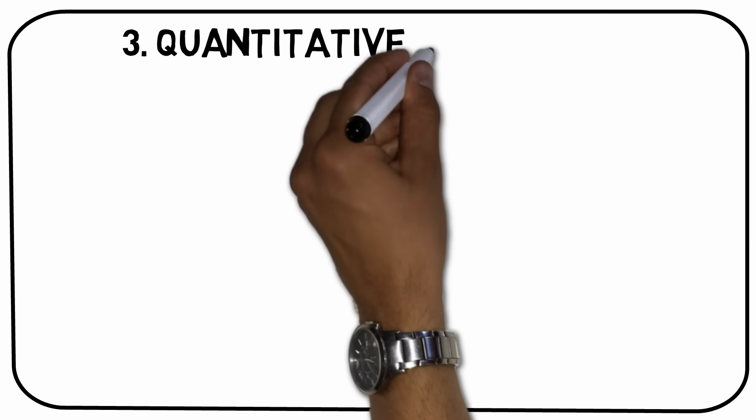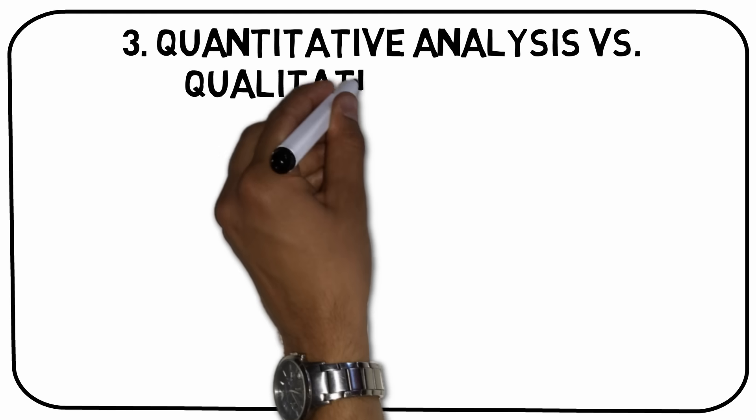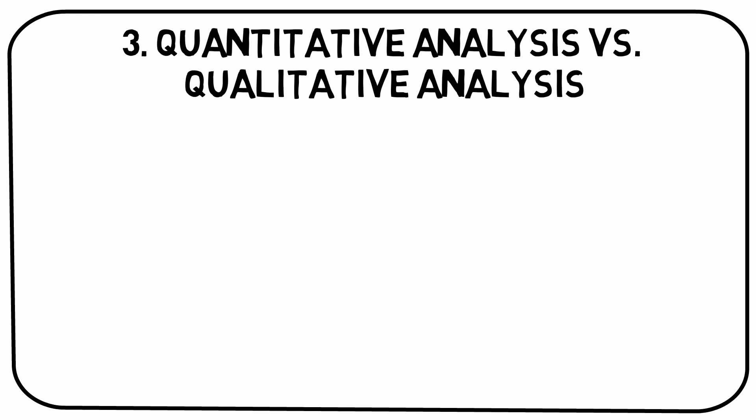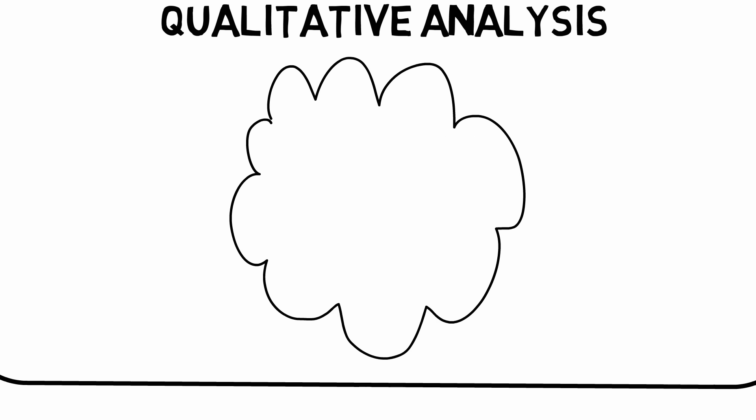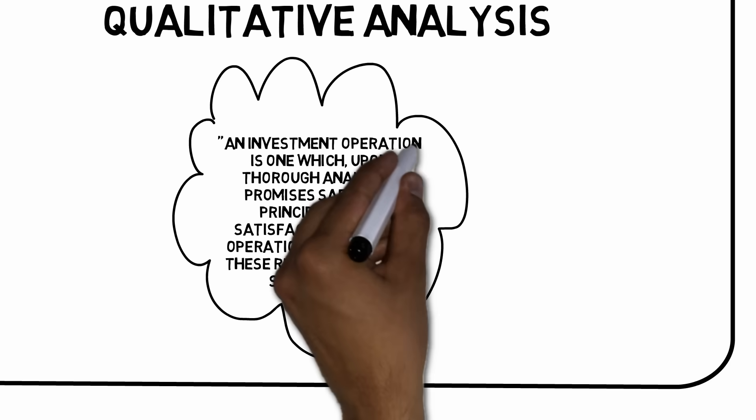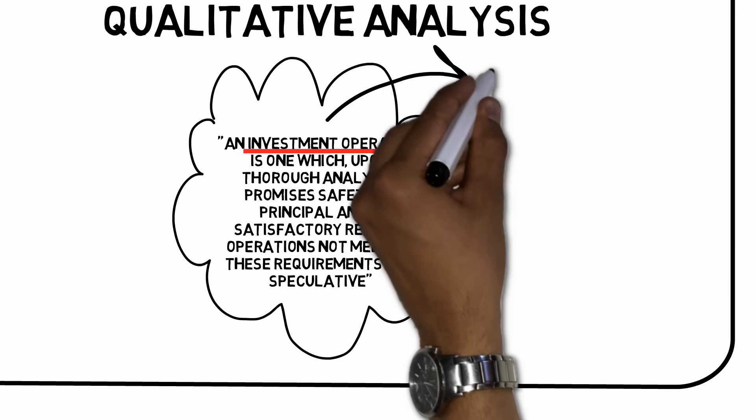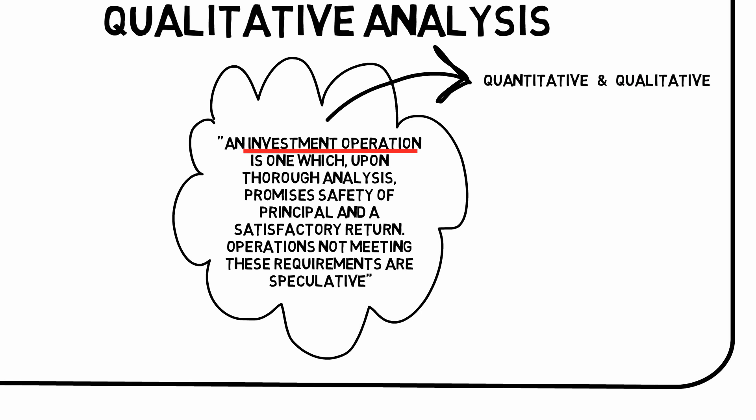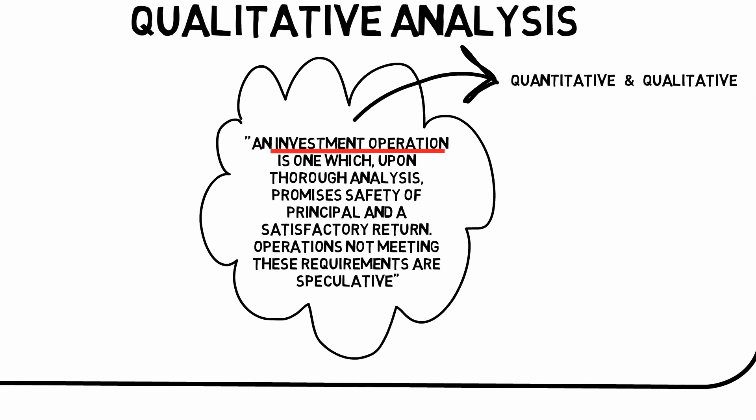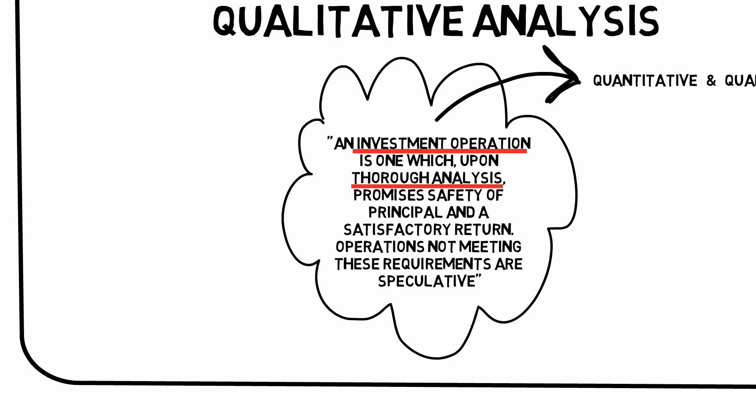Takeaway number three: Quantitative analysis versus qualitative analysis. In takeaway number one, we learned that an investment operation must be able to be justified both on quantitative and qualitative grounds. We're now going to decipher what that means in practice. An analysis should be thorough for it to be considered an investment operation.